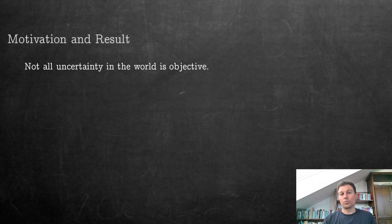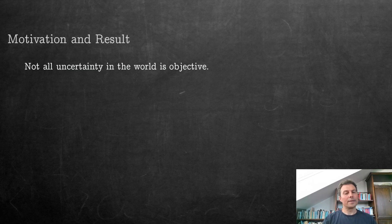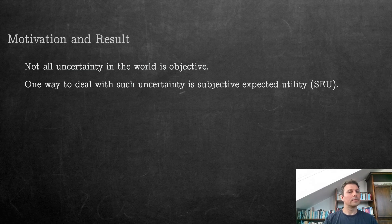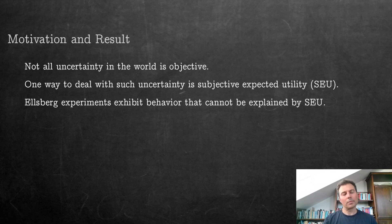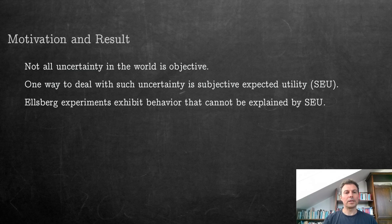Not all uncertainty in the world is objective, as is maybe the case in the casino where you can attach probabilities to certain events. But in a soccer game, the outcome is already somewhat unclear. One way to deal with such uncertainty is the traditional model of subjective expected utility. But this has come under some disrepute, empirically speaking, at least since the Ellsberg experiments that exhibit behavior that cannot be explained by subjective expected utility.